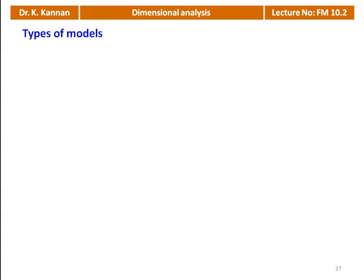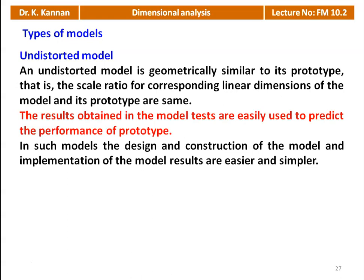There are two types of models used in model analysis. An undistorted model is geometrically similar to its prototype — the scale ratio of corresponding linear dimensions of the model and prototype are the same. The prototype and model are identical except for the scale ratio. Results obtained in the model test are easily used to predict the performance of the prototype, and design, construction, and implementation of results are easier and simpler.